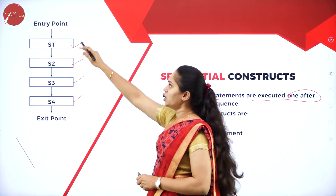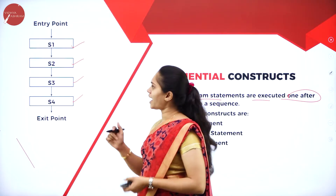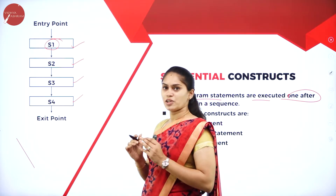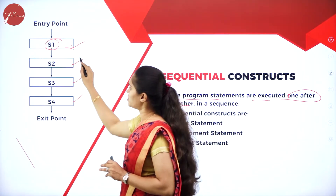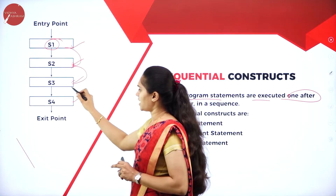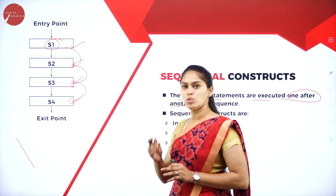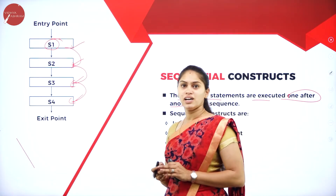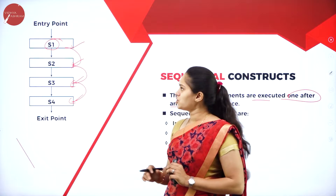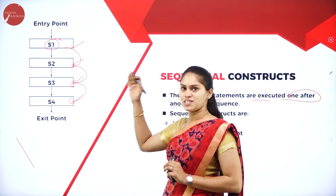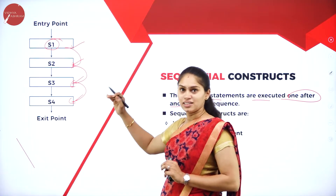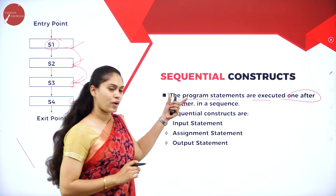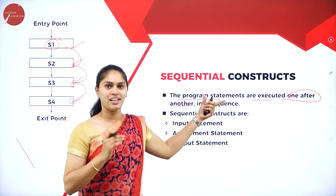The statements in a sequential construct can be input statements, assignment statements, or output statements. Execution proceeds one after another in a straight line — this type of construct is known as a sequence or sequential construct. It is linear in nature: one statement follows another with no backtracking.